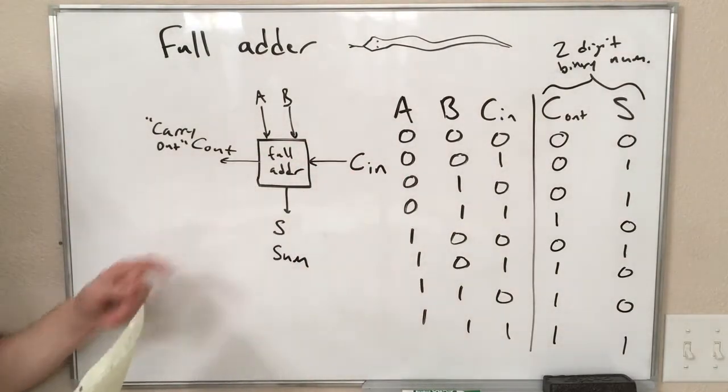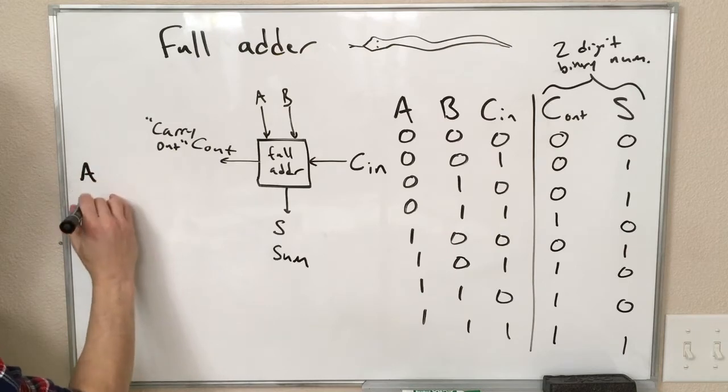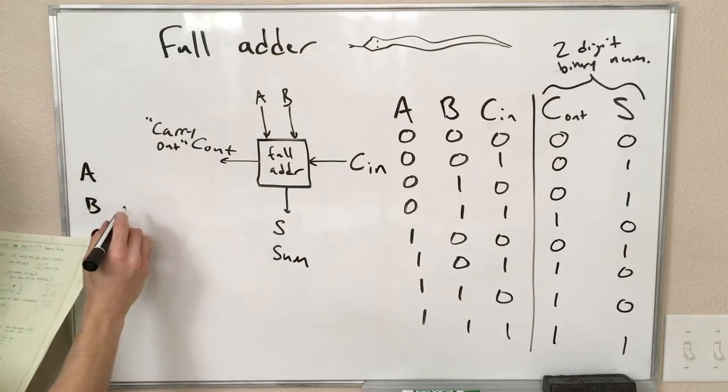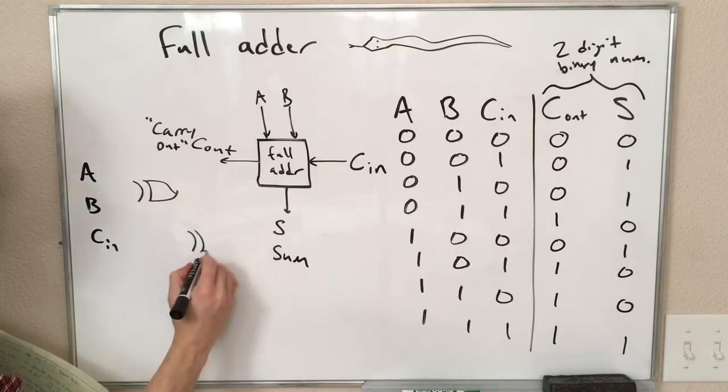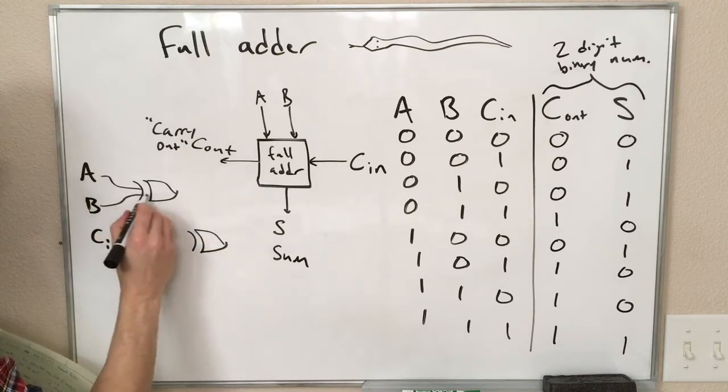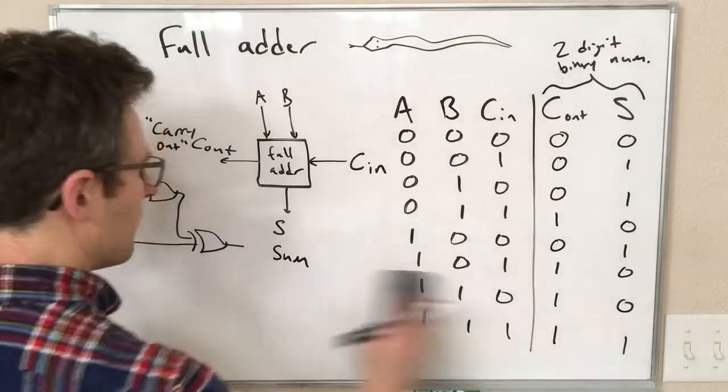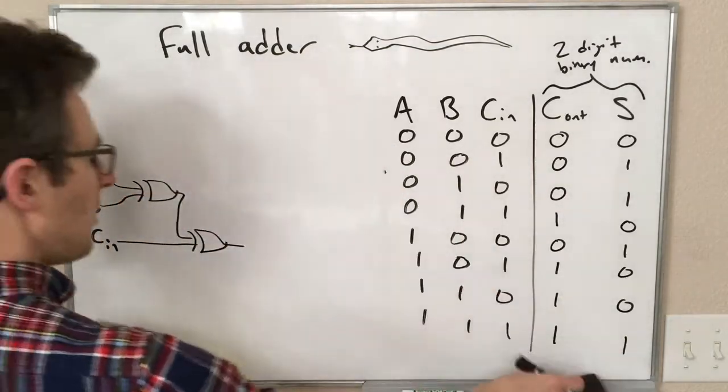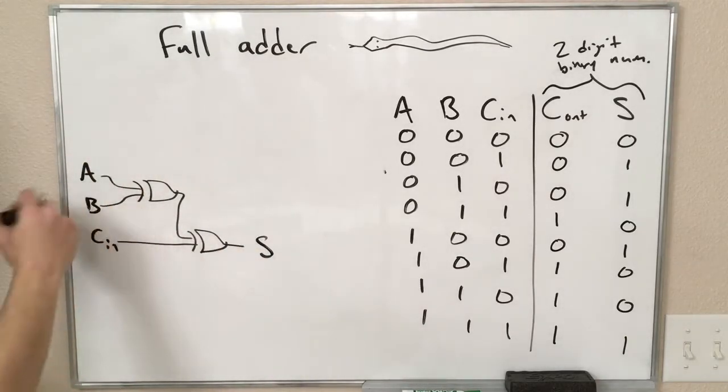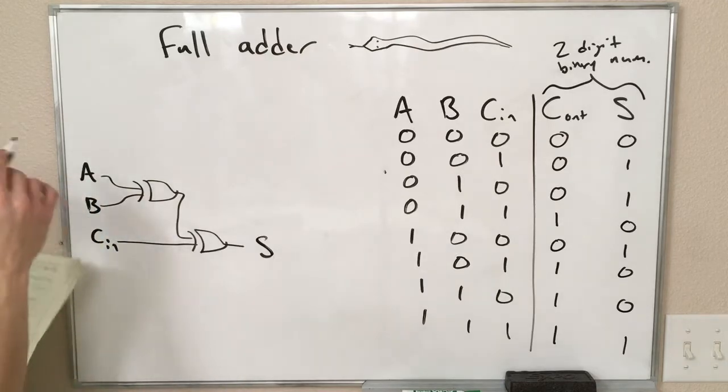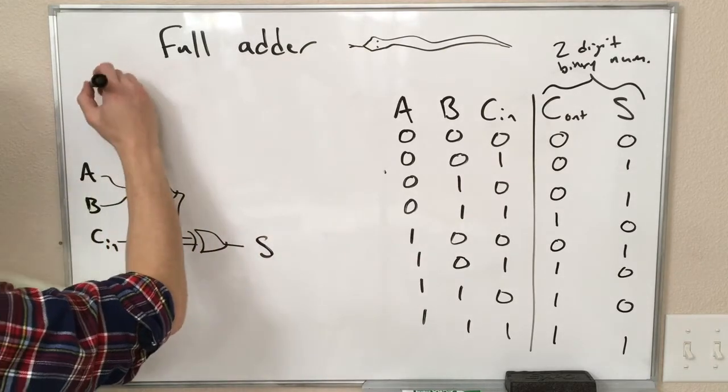Alright. So we can make this out of logic gates. I'll just show you one way to do it. There are multiple ways to do it. So if you put these into XOR gates, like this, this gives us the sum variable, so that's a simple XOR operation on a, b, and c, in.